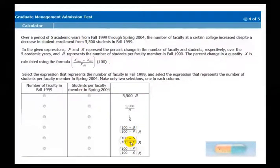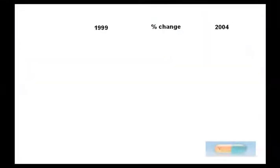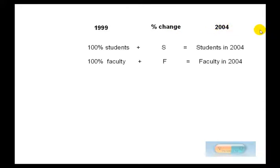Right, so which of these is the right answer? Well, let's draw it out. So basically, we have information for 1999, we know the percent change, and we're trying to find the information for 04. So you just draw it out.